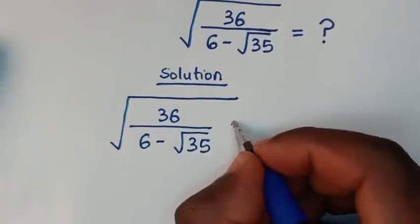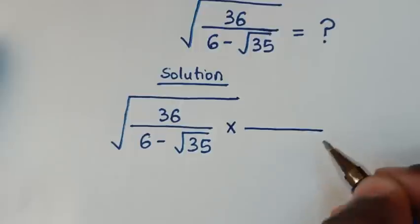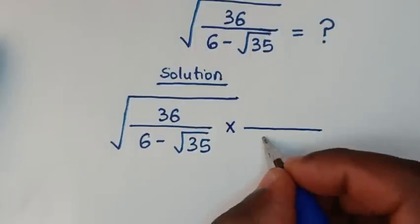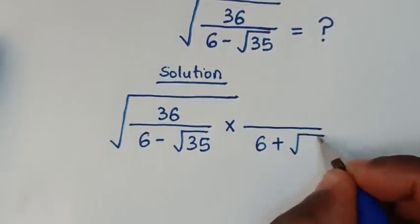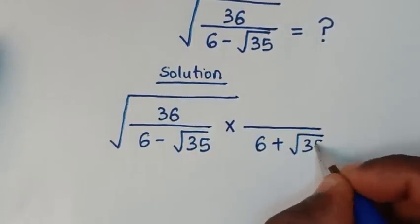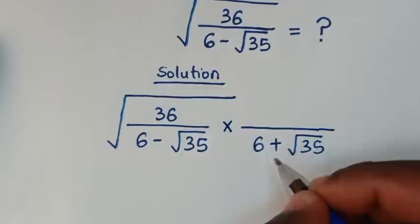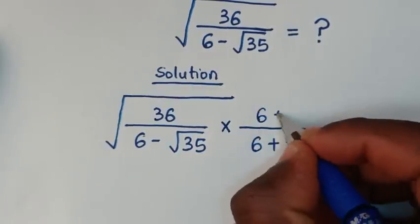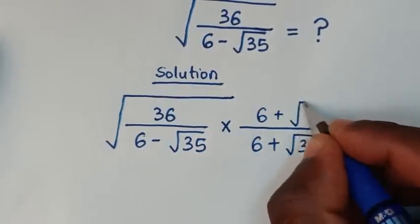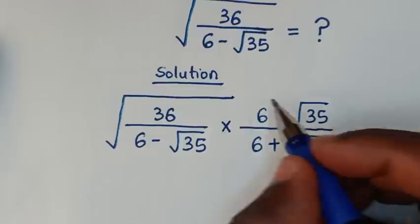We will multiply in the denominator by 6, and here we have minus, so it will be plus square root of 35. Also, in the numerator we will multiply by 6 plus square root of 35.